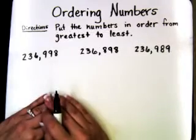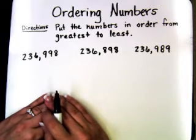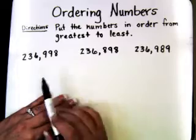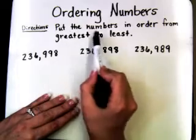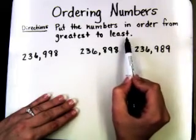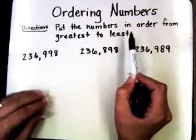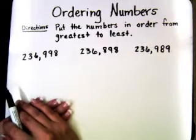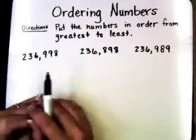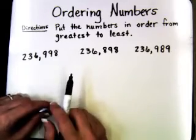Okay, let's look at another one. But remember, we need to read the directions carefully first. The directions have changed: put the numbers in order from greatest to least. So now we're looking for the greatest number, and we'll begin just like we did earlier — we're going to start at the greatest place.